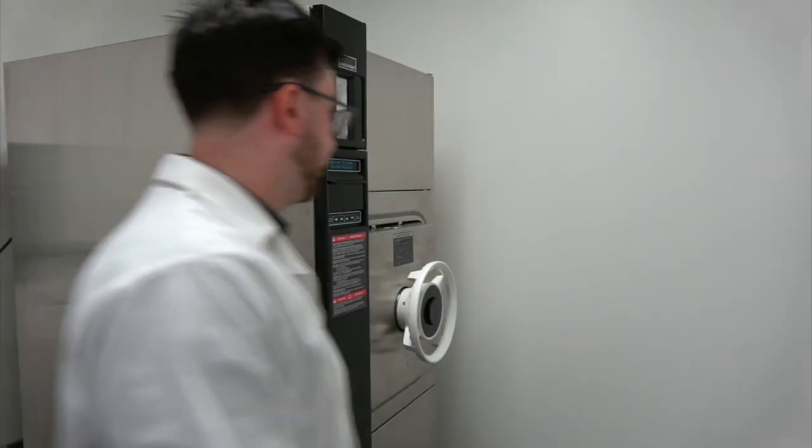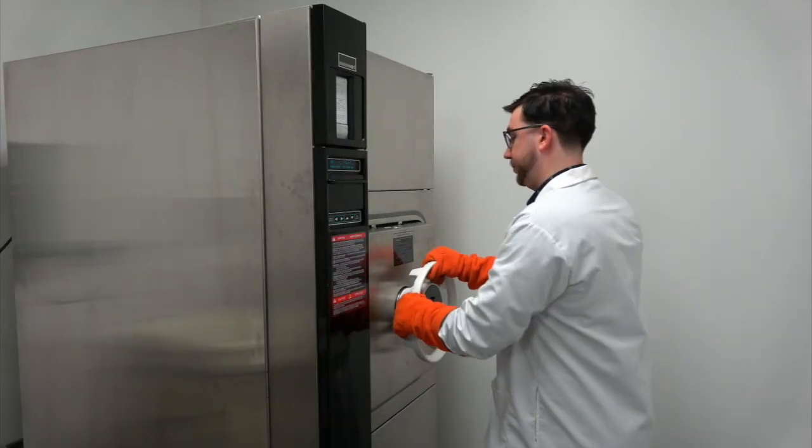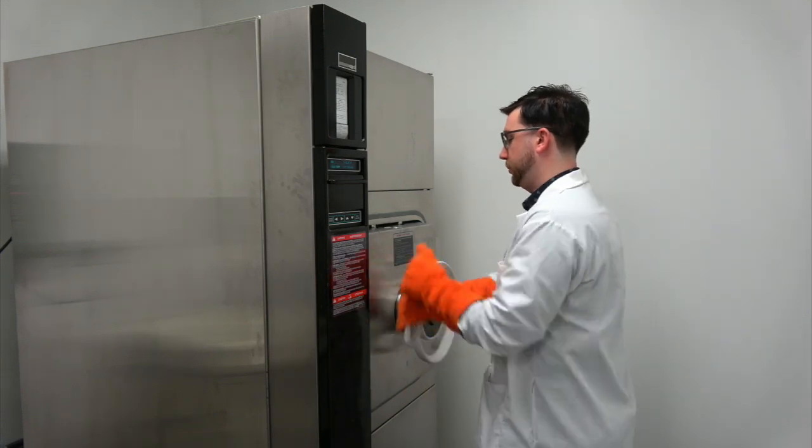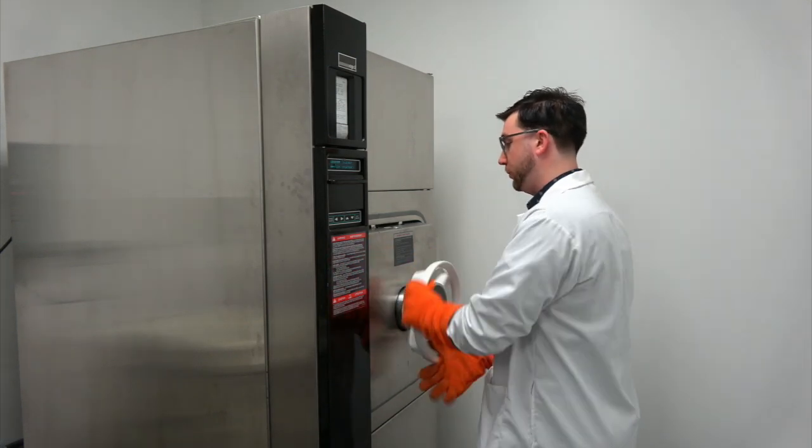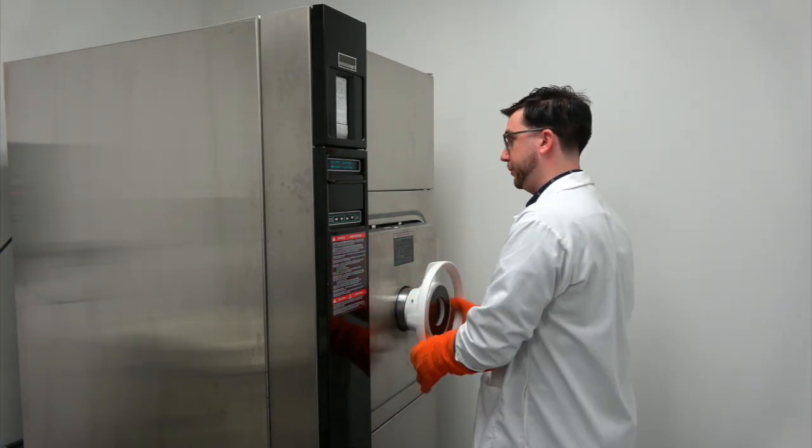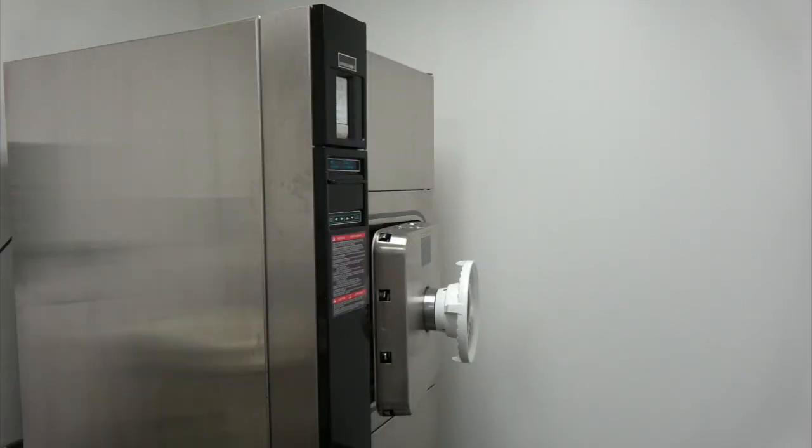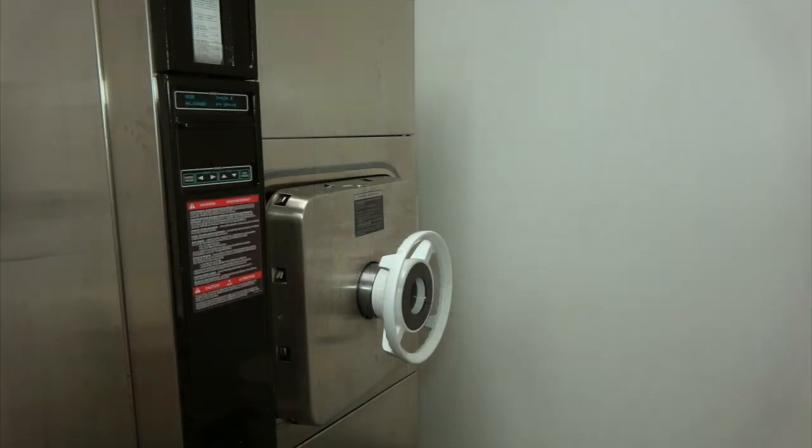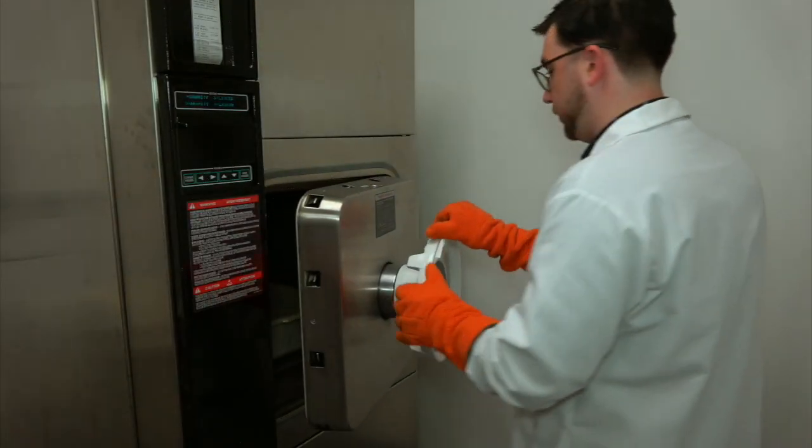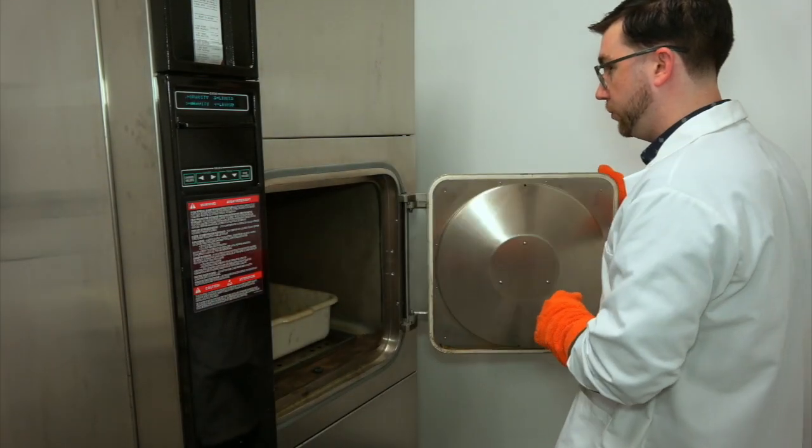Once the autoclave cycle is complete, it's time to retrieve our bottle of molten LB agar. When handling anything coming out of the hot autoclave, you should always wear thermally protective gloves. Before we retrieve our agar, it's good practice to leave the autoclave door open, just a crack, for about 10 minutes. This will allow any excess steam to escape and will cool our sample slightly.